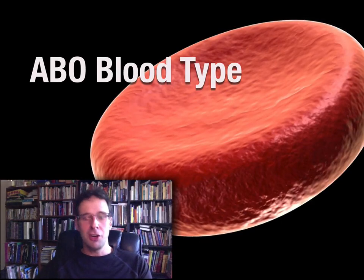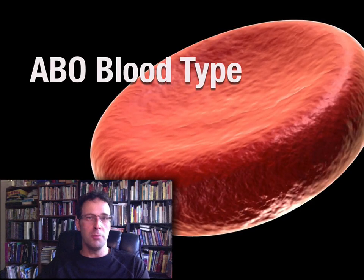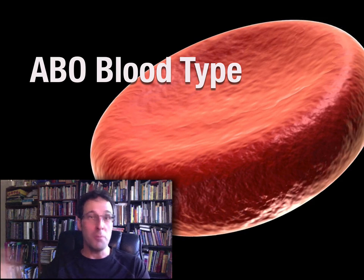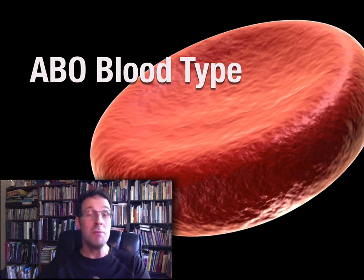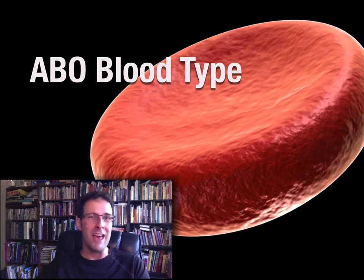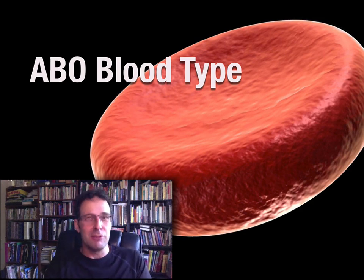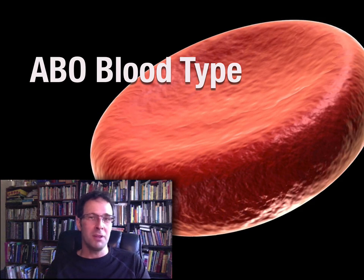In this short video, I want to explain ABO blood type. What does it mean to have A-type blood, B-type blood, AB-type blood, or O-type blood? I'm sure you've heard those terms and you may even know what blood type you have. But what does it mean at a molecular level to have A- or B-type blood?